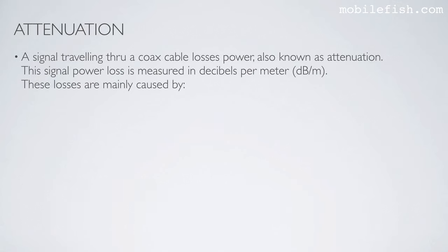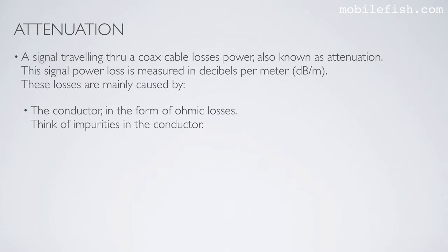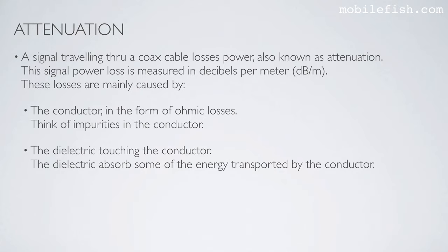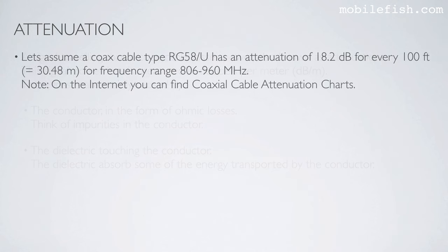A signal traveling through a coax cable loses power, also known as attenuation. The signal power loss is measured in decibels per meter. These losses are mainly caused by the conductor in the form of ohmic losses — think of impurities in the conductor — and the dielectric touching the conductor. The dielectric absorbs some of the energy transported by the conductor. For example, coax cable type RG58-U has an attenuation of 18.2 dB for every 30.48 meters for a frequency range of 806 to 960 MHz.